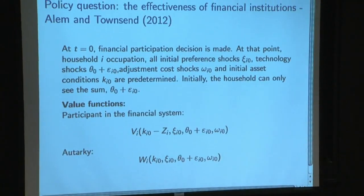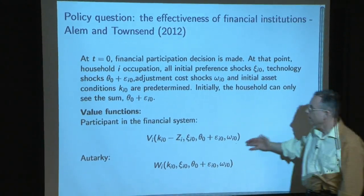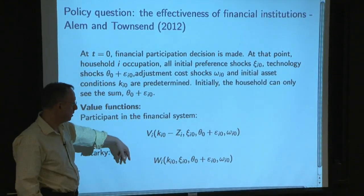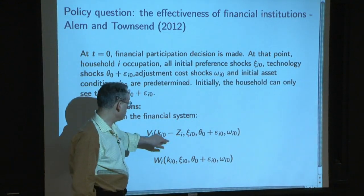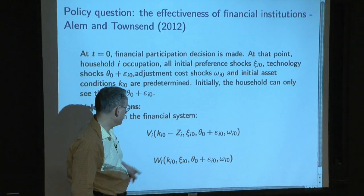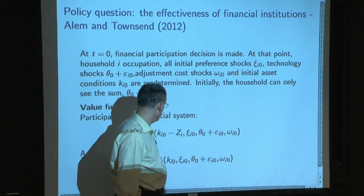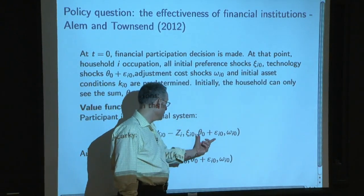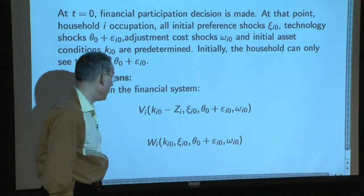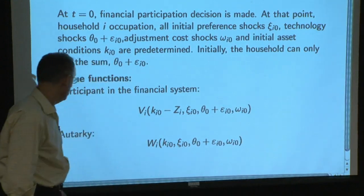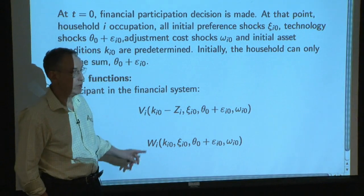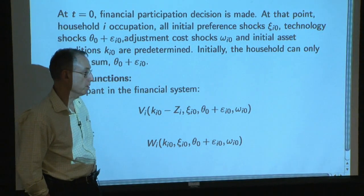You create a value function for being a participant in the financial system. If you joined, you subtract off that fixed cost. You're joining after the realization of the adjustment cost shock, the idiosyncratic and aggregate shock, and the preference shock. You could choose not to join — you'd have another value function — and you don't subtract off the cost from the capital stock.